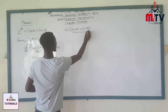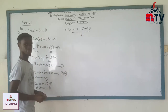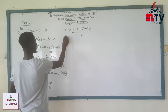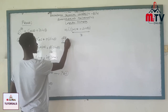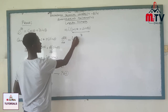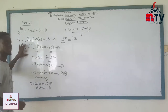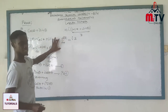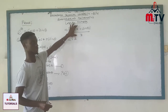Therefore, we say cos θ plus i sine θ can be written as z. So the whole of this side can be written as i·z. Therefore, the derivative of z with respect to θ is equal to i·z.